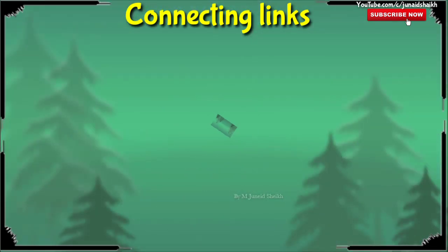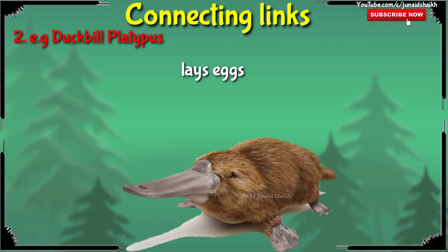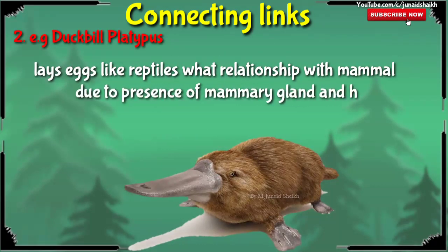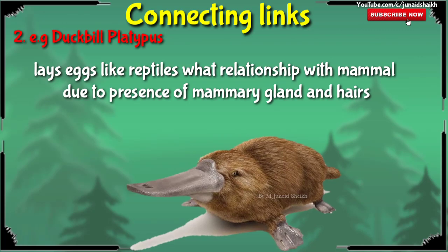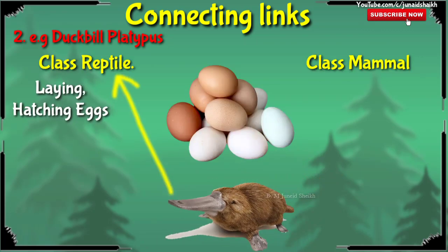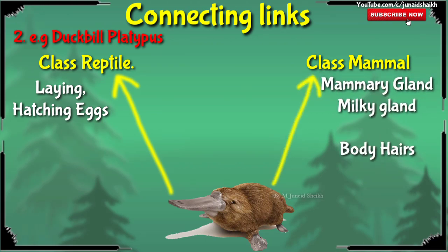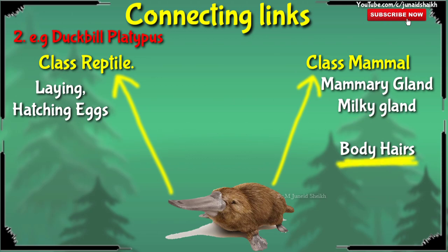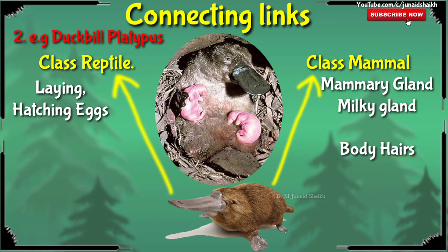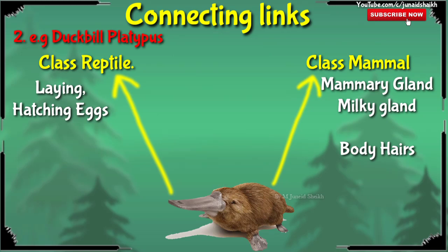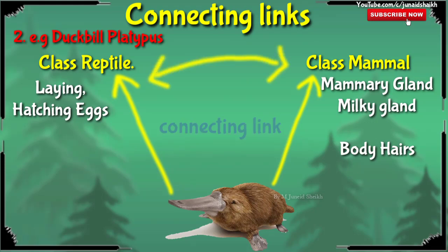The next example is the duck-billed platypus. Duck-billed platypus lays eggs like reptiles, but has a relationship with mammals due to the presence of mammary glands and hair. Egg-laying is a reptilian character, but the presence of mammary glands is a mammalian character. The mammary gland is a milk-producing gland used to feed their young ones, and hair on the body is also a mammalian character. See this picture of duck-billed platypus feeding milk to their young one. This indicates that duck-billed platypus is the connecting link between the class Reptilia and Mammalia.